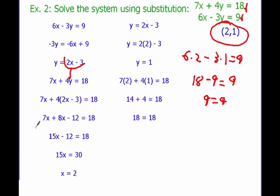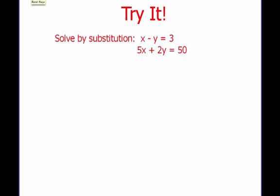So all we're doing here: we solved for y, think of it as putting it in slope-intercept form. We take what we know y is and plug it into the second equation, use that to figure out what x is, take our x and plug it back in to figure out what y is, then check our work to get the ordered pair (2, 1). Your try-it problem for tonight is to use substitution and solve: x minus y equals 3, and 5x plus 2y equals 50. Find an x and a y that is a solution for both equations.